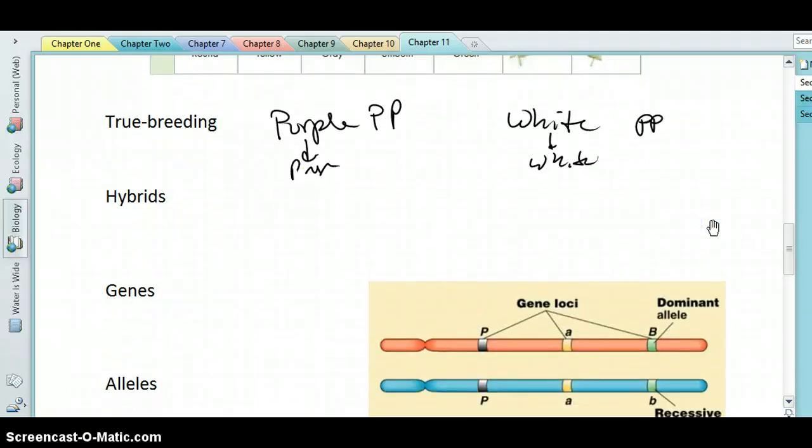When you cross true breeding lines, you create hybrids. So if we cross purple and white individuals, we will create hybrid individuals. In this case, they will be big P, little p, for example.